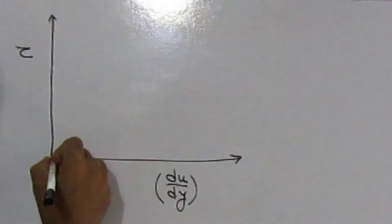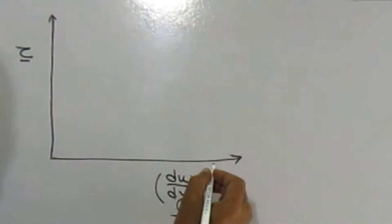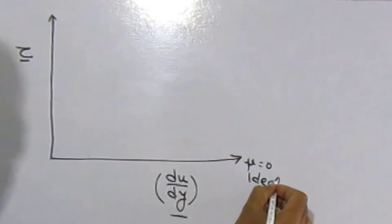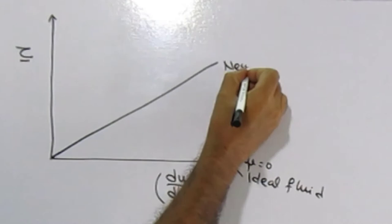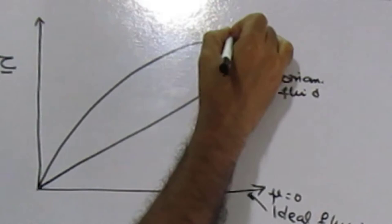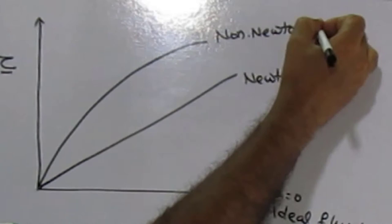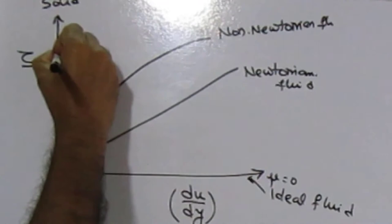On the graph, the vertical axis is shear stress and the horizontal axis is velocity gradient du/dy. Where mu equals 0, viscosity is 0, this line represents ideal fluid. Where shear stress is proportional to du/dy, this is Newtonian fluid. The curve which does not obey Newtonian behaviour — tau not proportional to du/dy — is non-Newtonian fluid. This is ideal plastic. And the vertical axis with zero velocity gradient represents ideal solid.